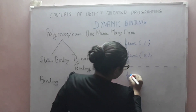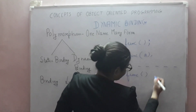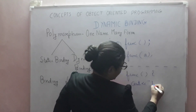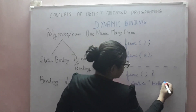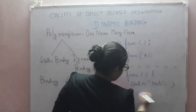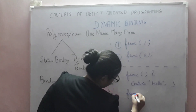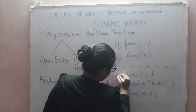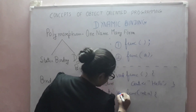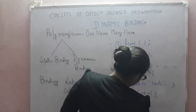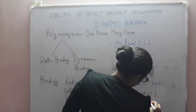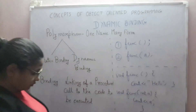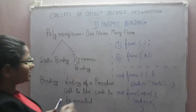And you are having two function definitions. First: funk without any argument — cout 'Hello'. Second: funk with a single argument int a — cout a. So you have two function definitions and two function calls.